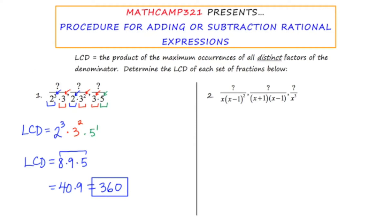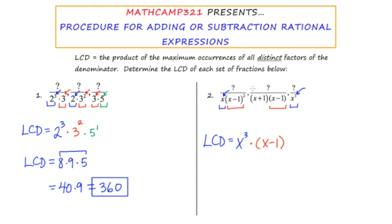In example two, we don't have any numbers — just algebraic factors. One factor is x, appearing in the first and last fractions. Looking at the powers of x, I have x to the first and x to the third. Three is the largest power, so x cubed. Scanning through, I find another factor: x minus one, appearing in two denominators. The powers of x minus one are two and one — two beats one, so I write x minus one squared.